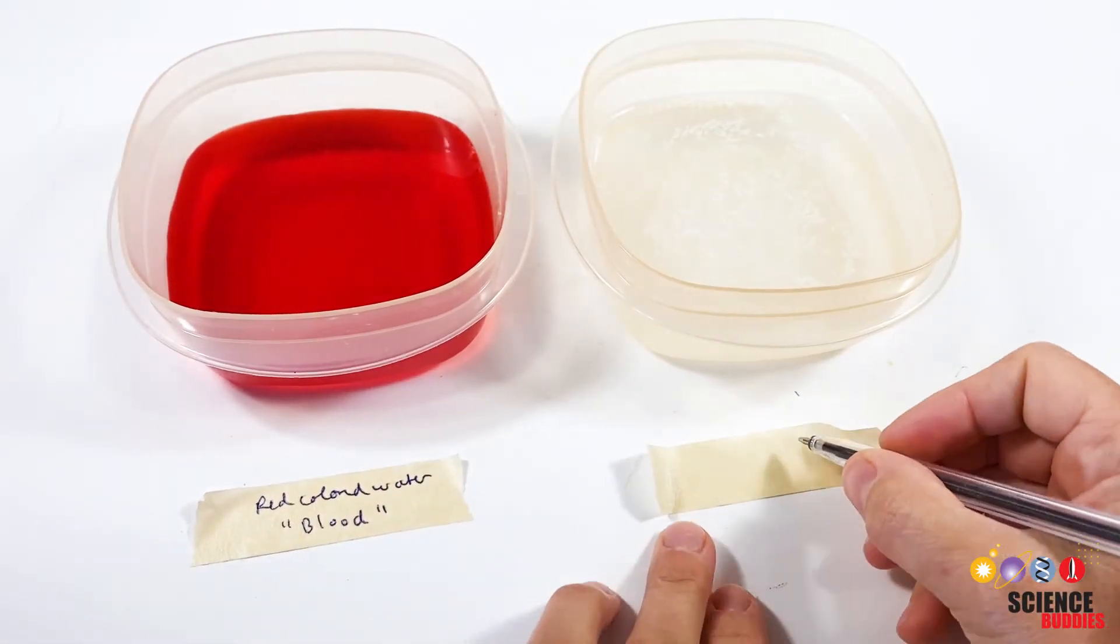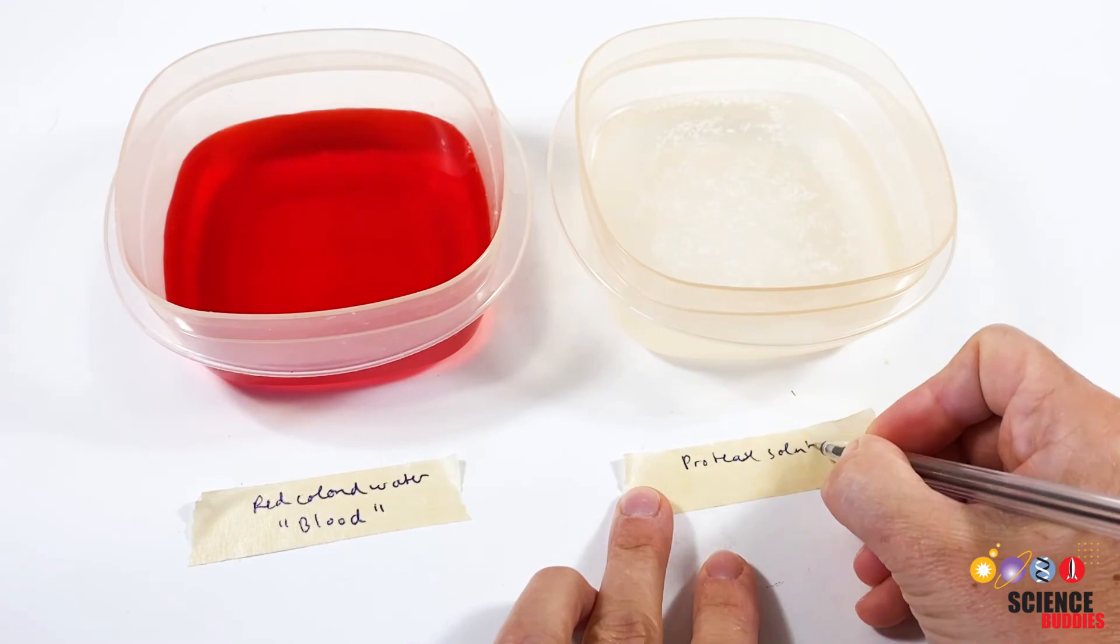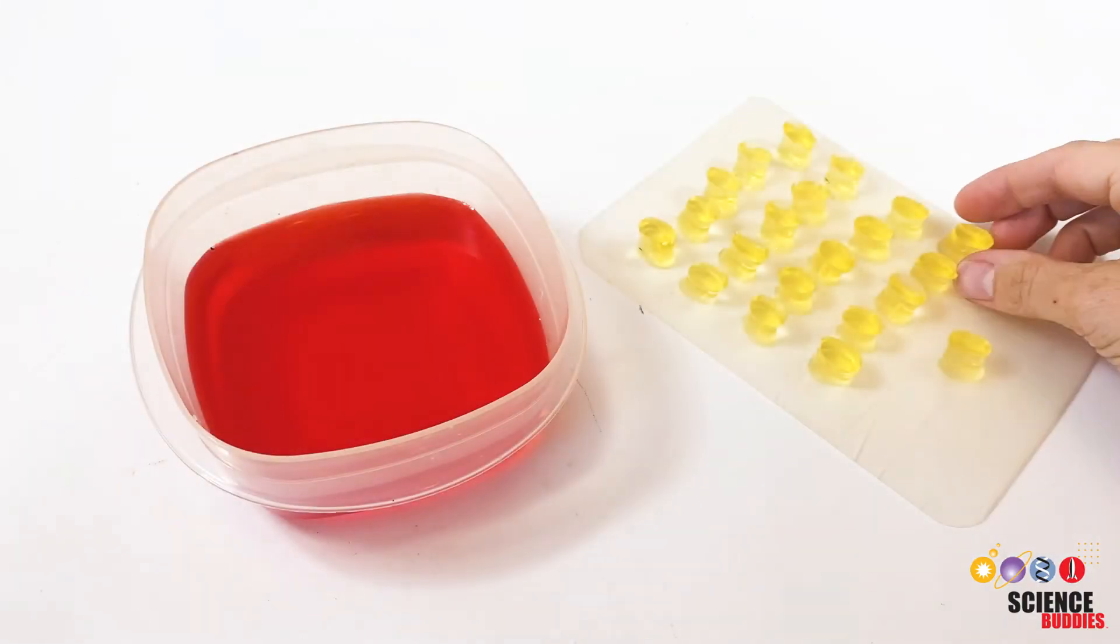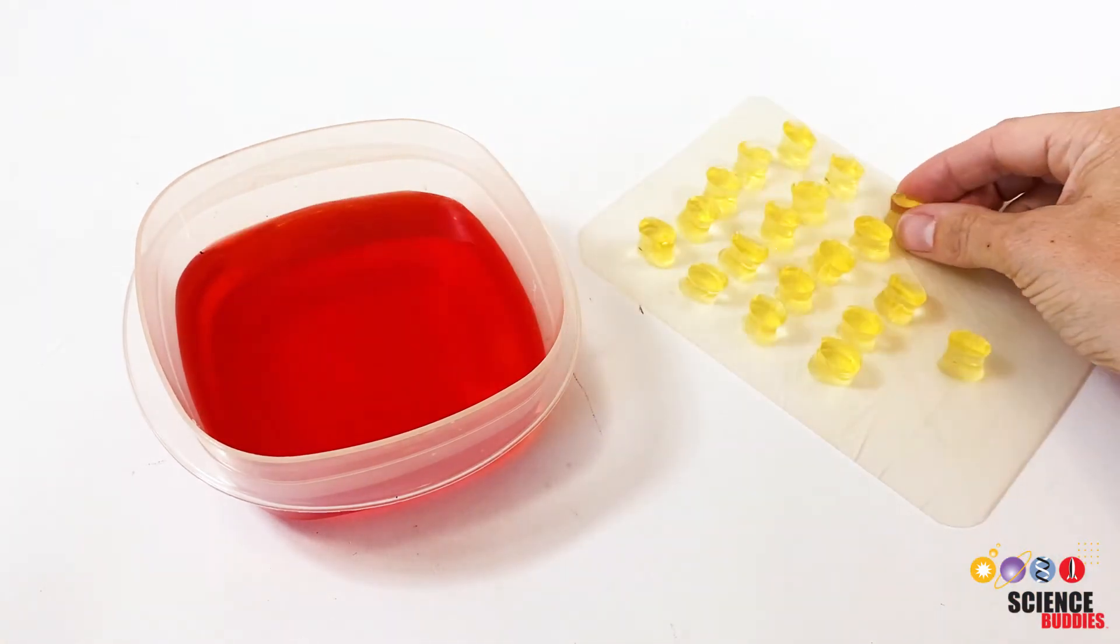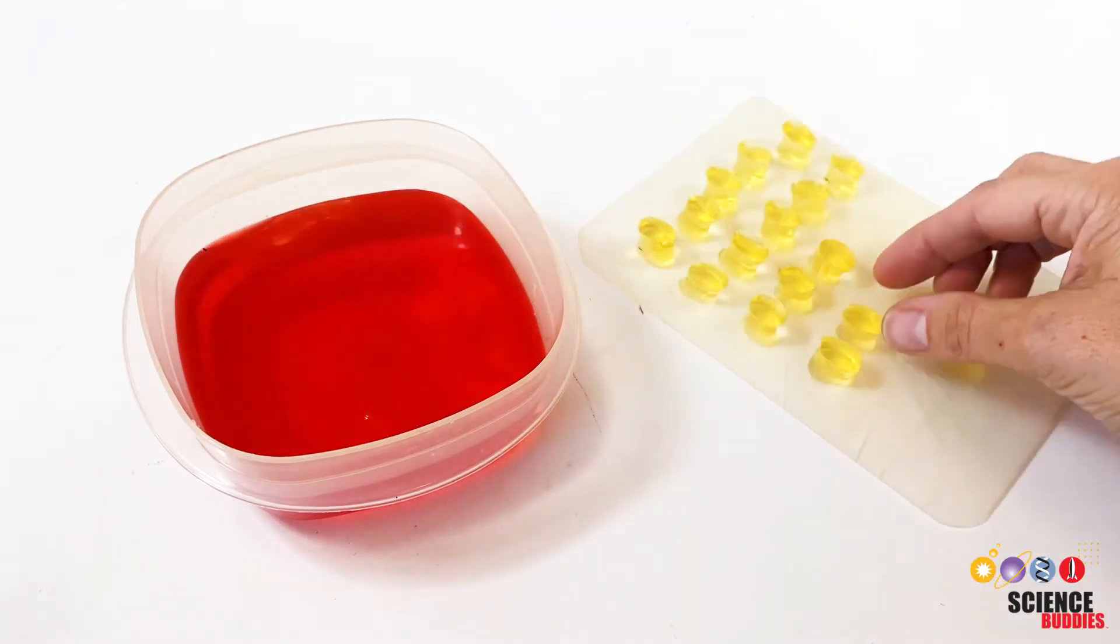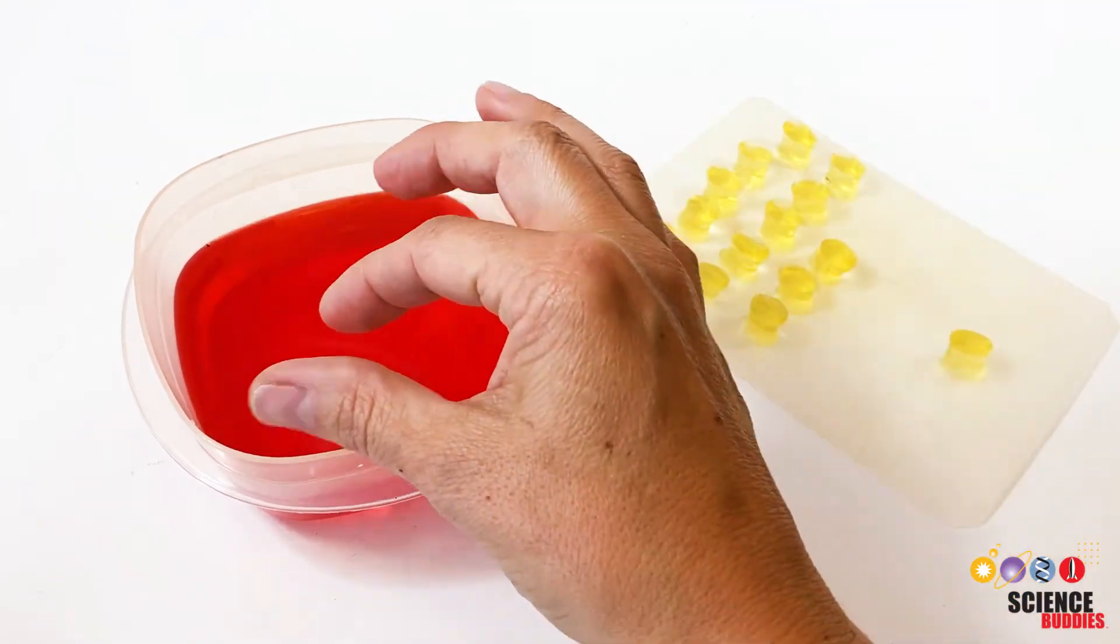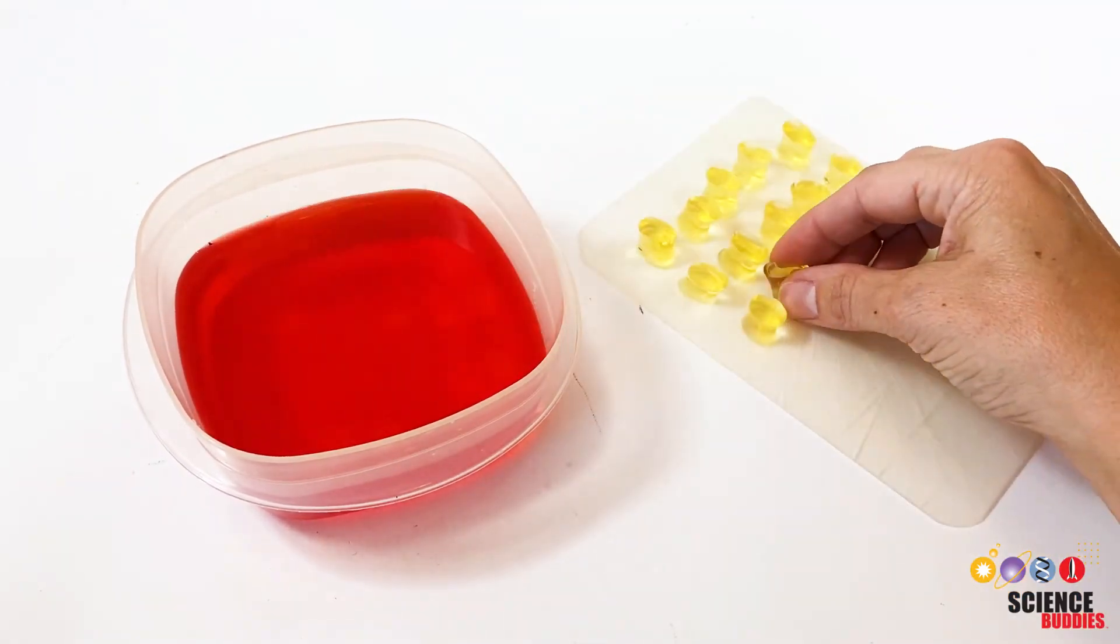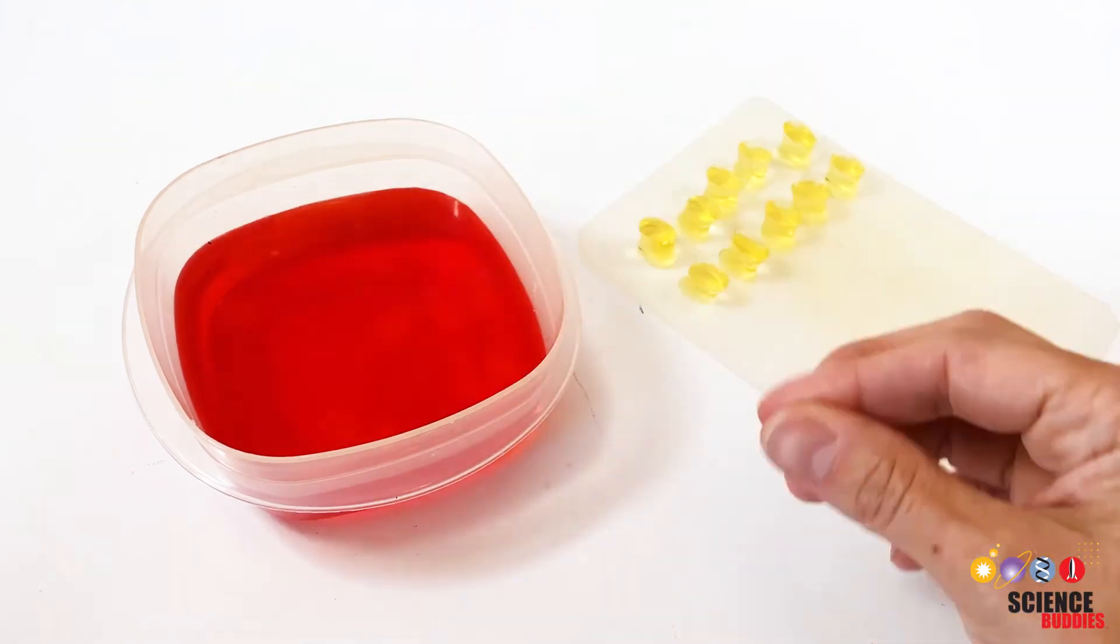Make sure to label your treatment conditions first before you start your jello treatments. Then carefully place 10 jello shapes in the container with the red colored water. Make sure all the jello shapes are in the water and are not lying on top of each other. This test models insulin being injected into the body and absorbed into the bloodstream.